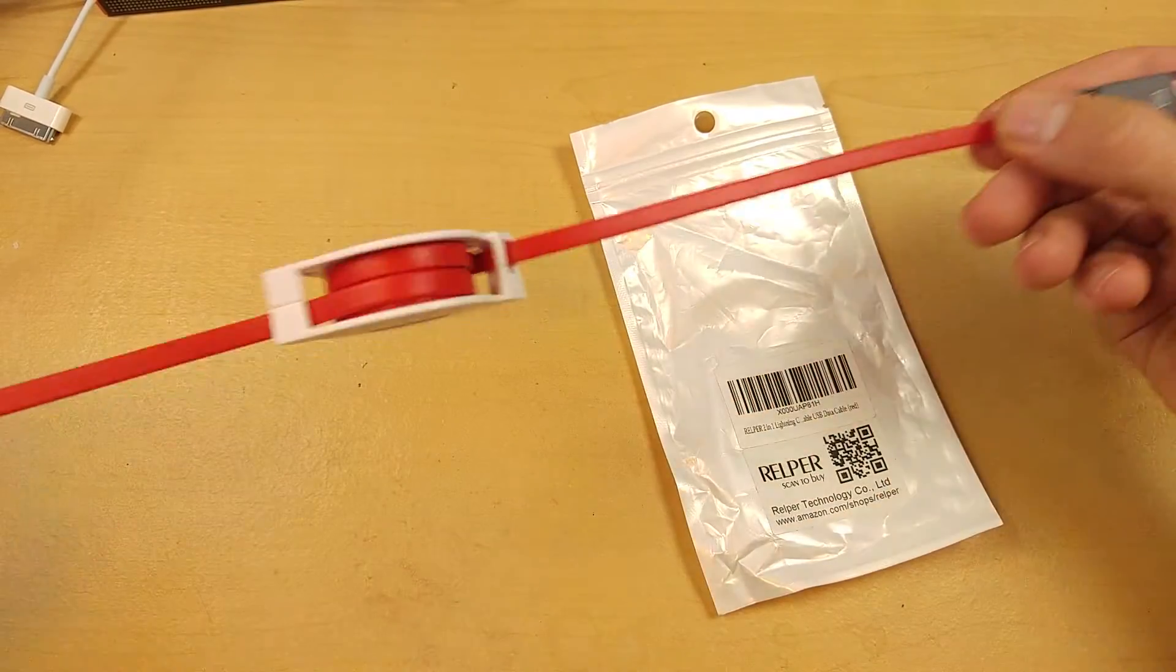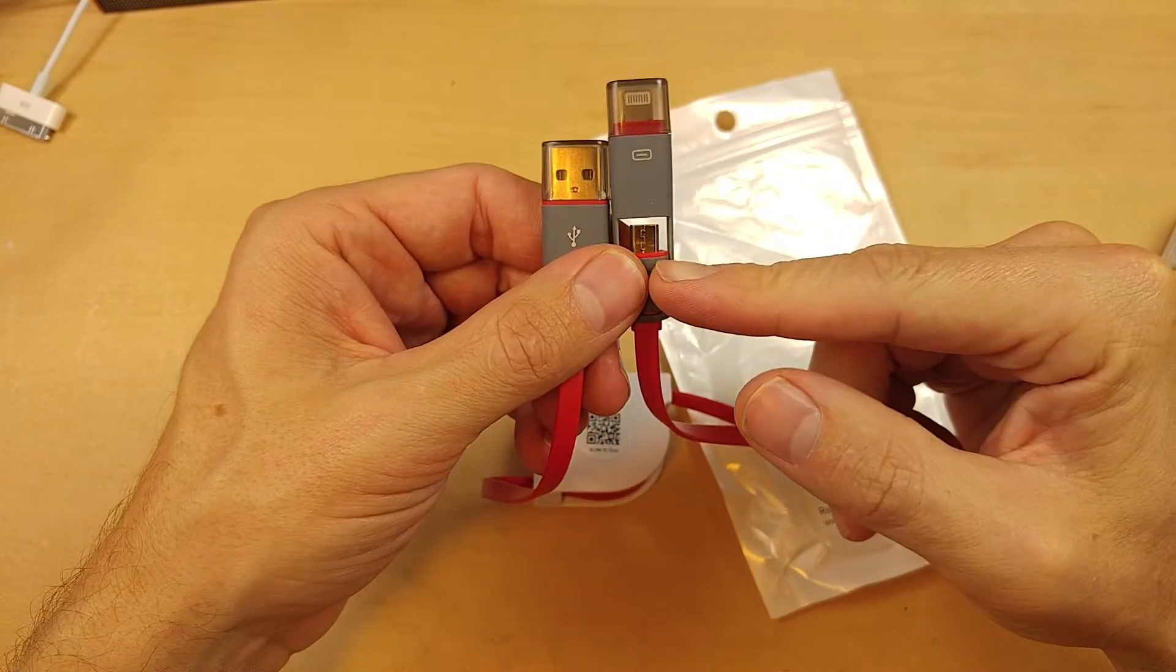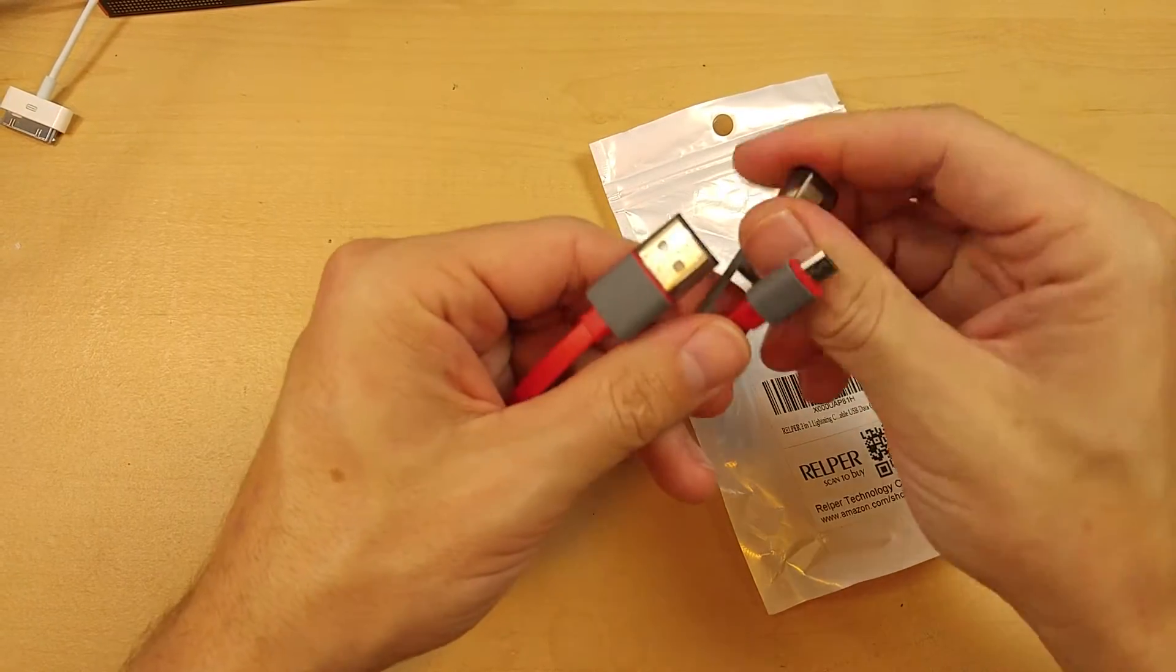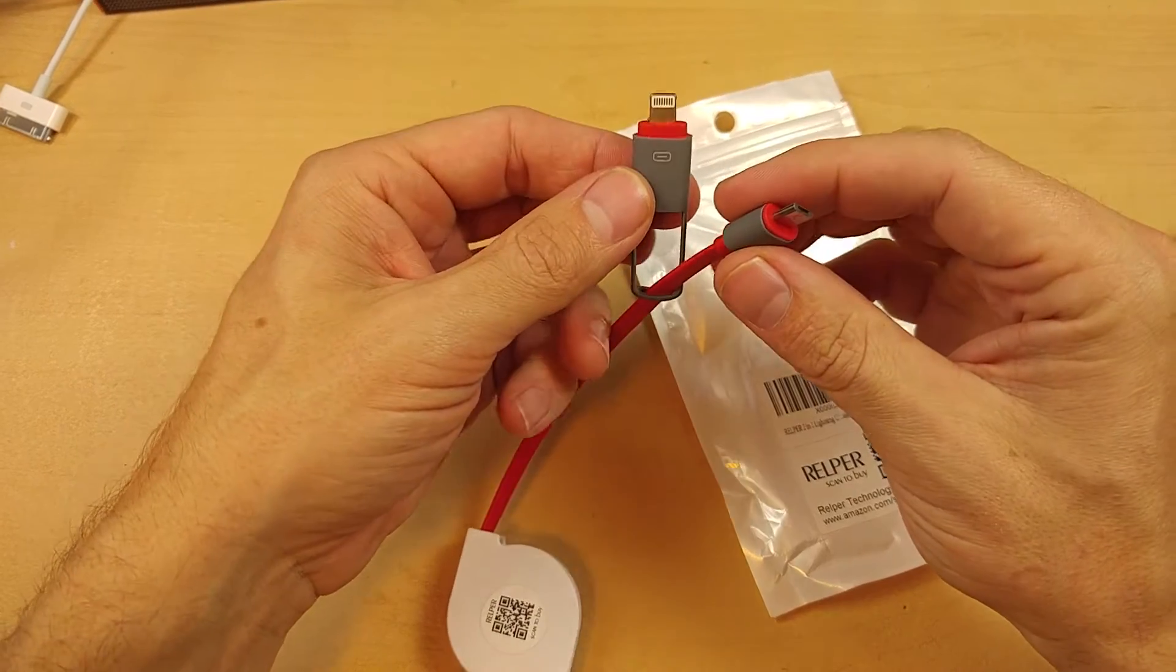Today I'm reviewing a RELPER 2-in-1 retractable USB cable. This actually has both micro USB and lightning cable connectivity on it. It's got the adapter permanently attached and built in there.